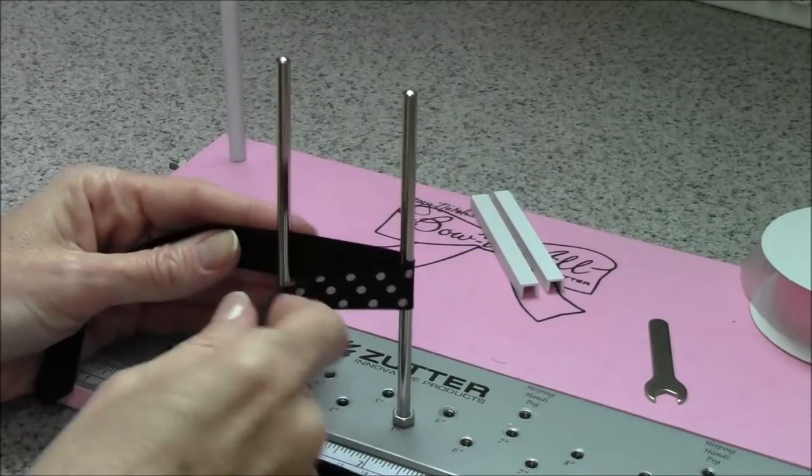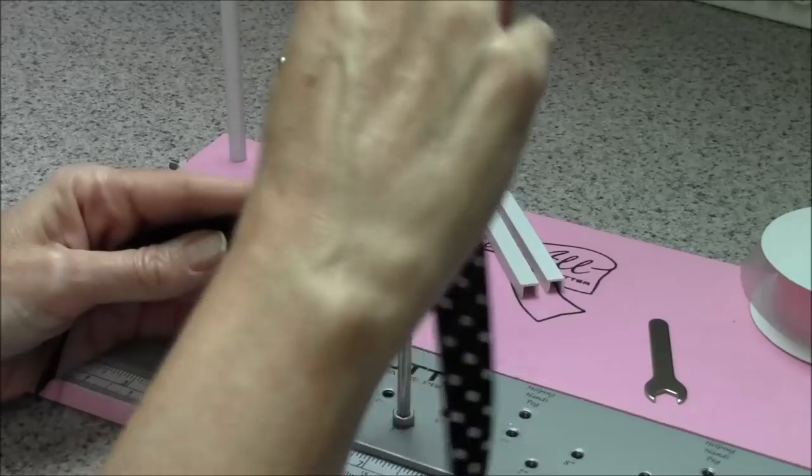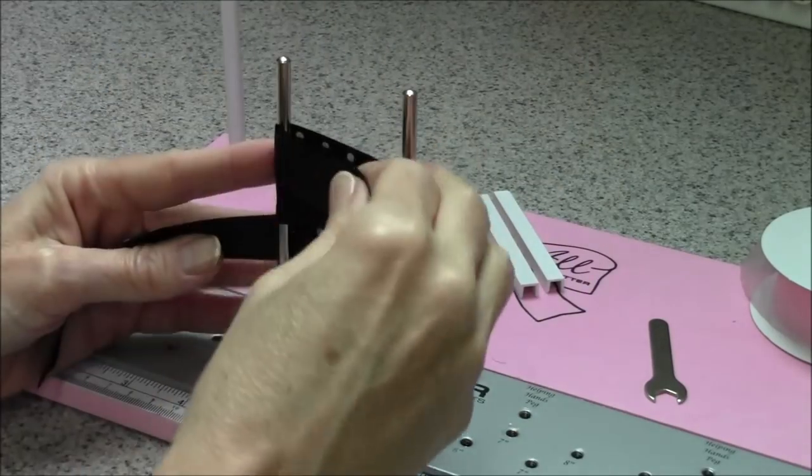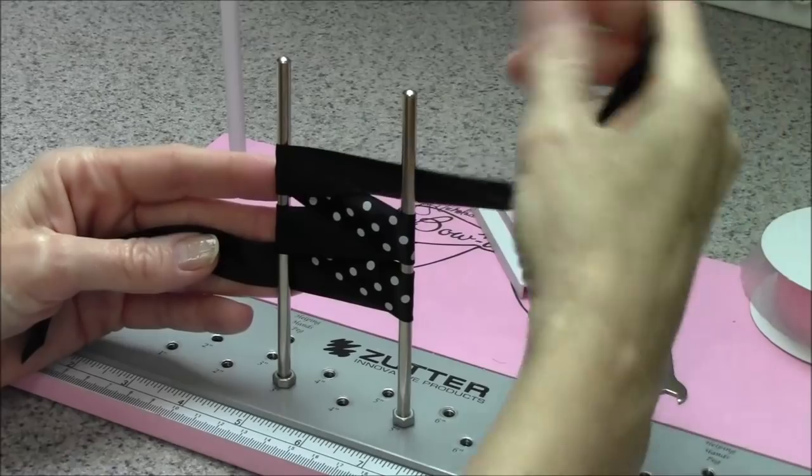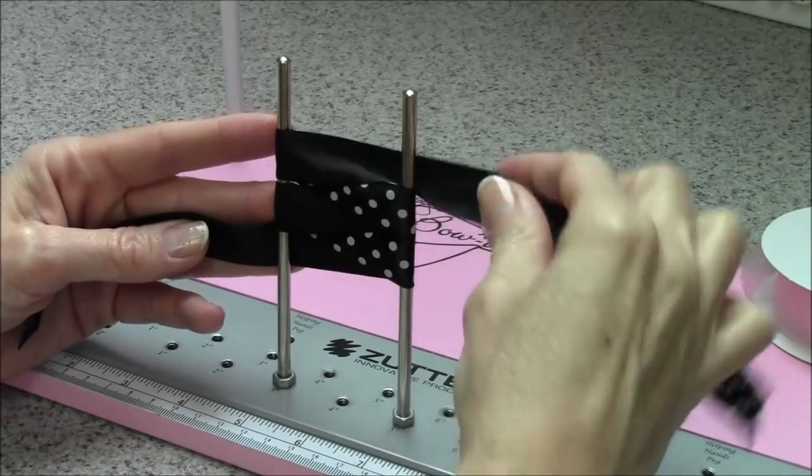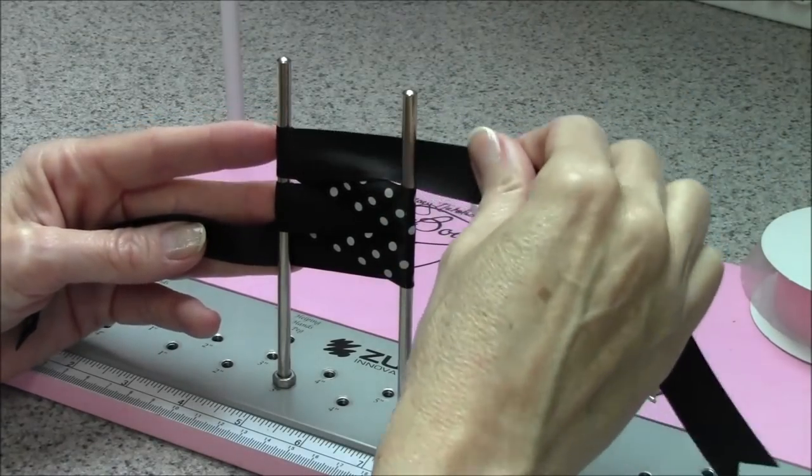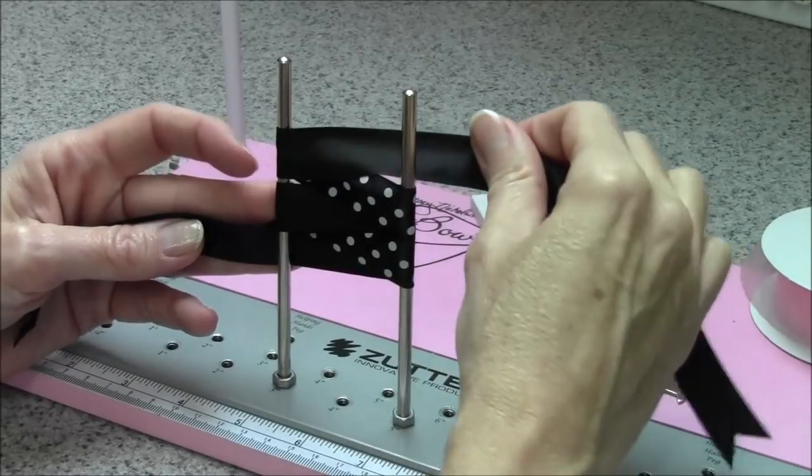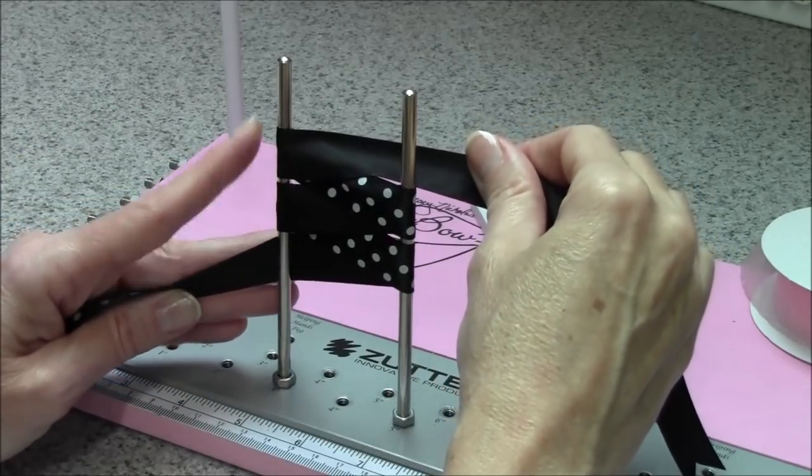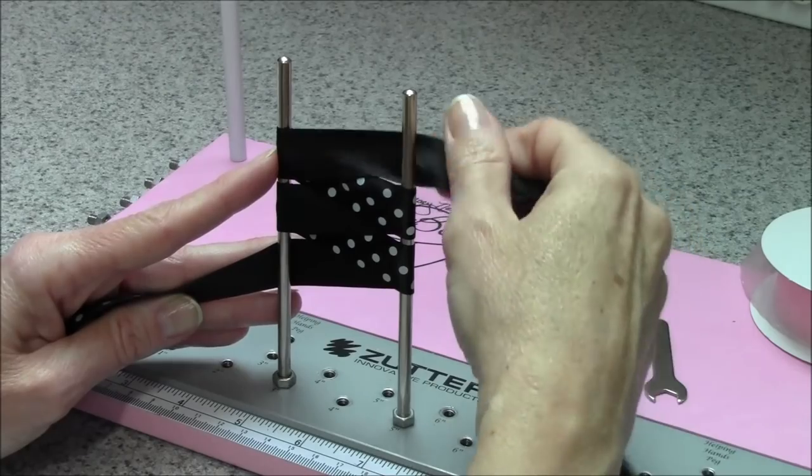In our first video I was showing a lot of bows using the figure eight wrapping method. As you can see with a ribbon that's printed on one side, that's not going to work because your printed side is showing on the right but you've got the back of the ribbon exposed on the left side.